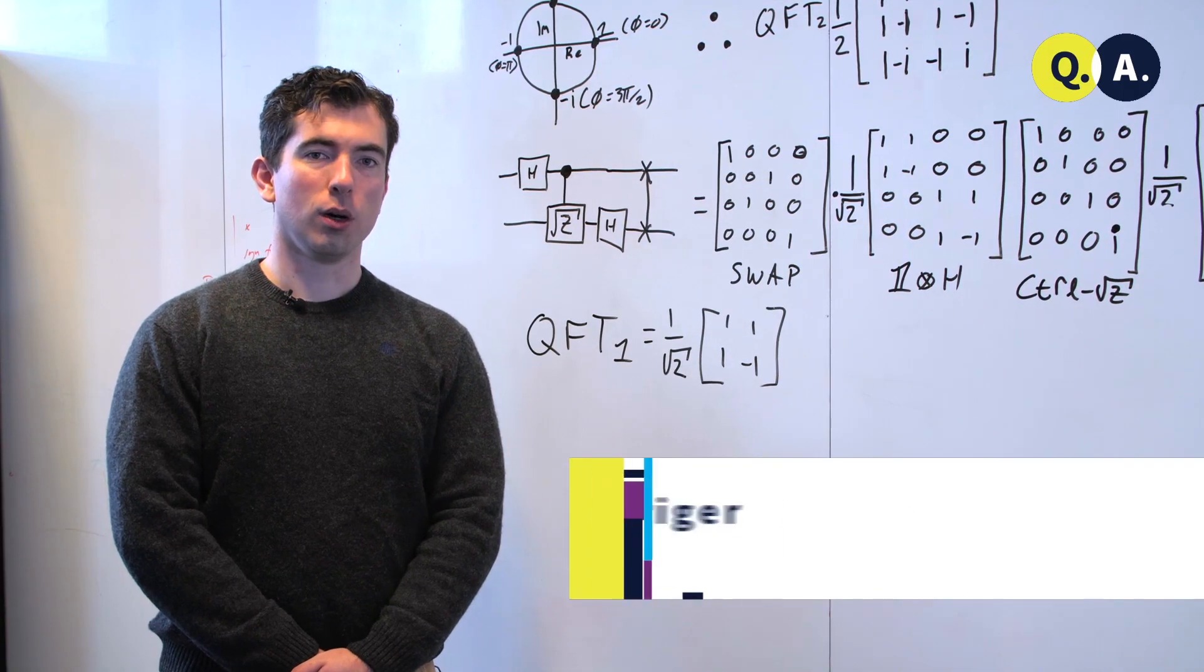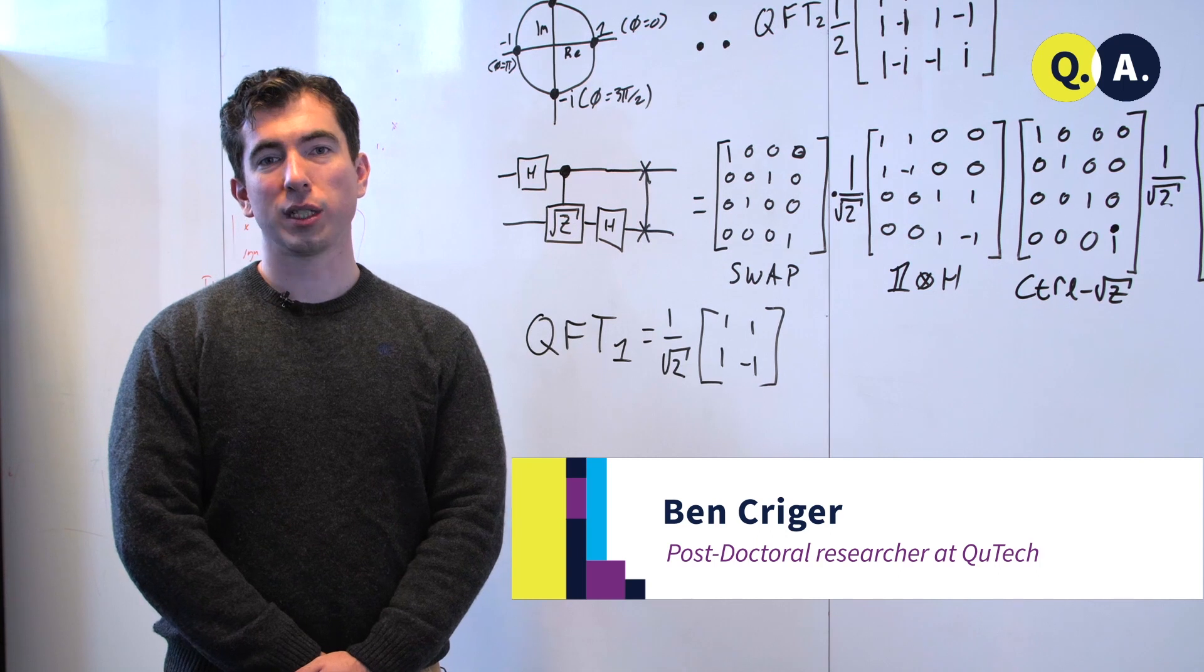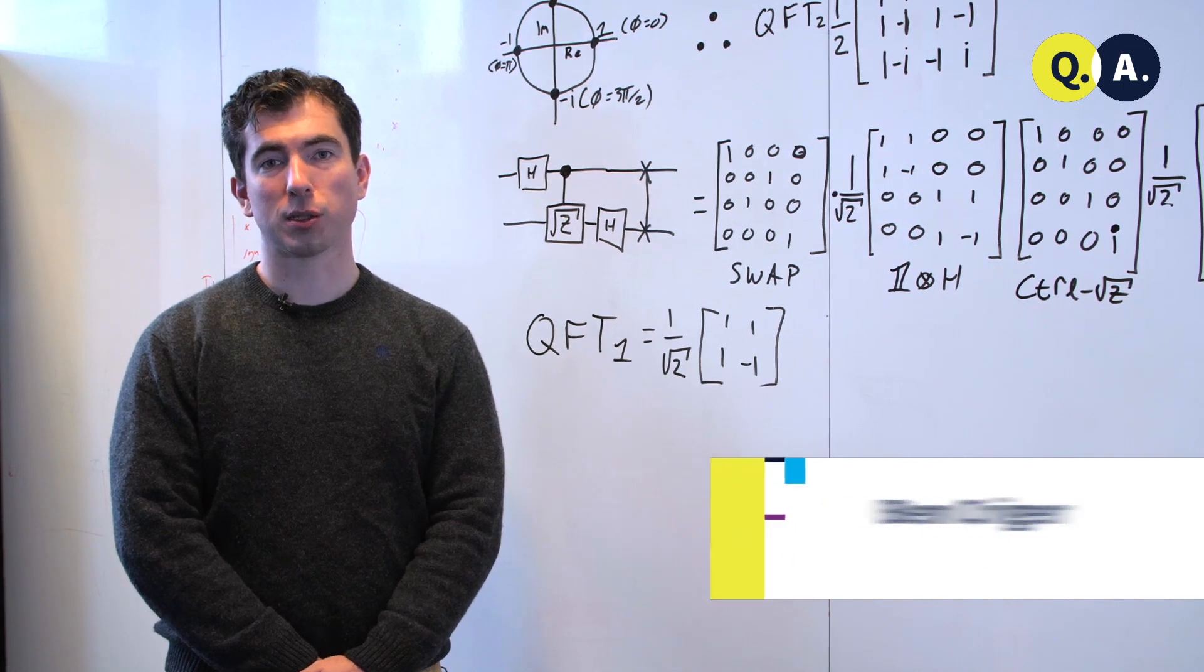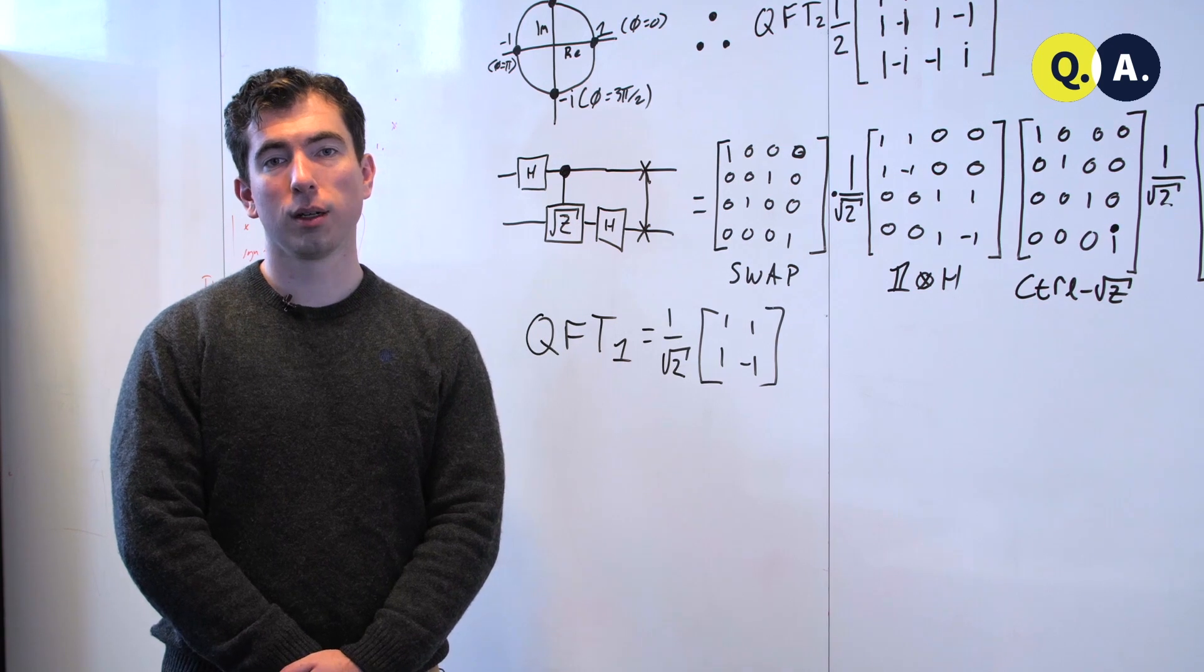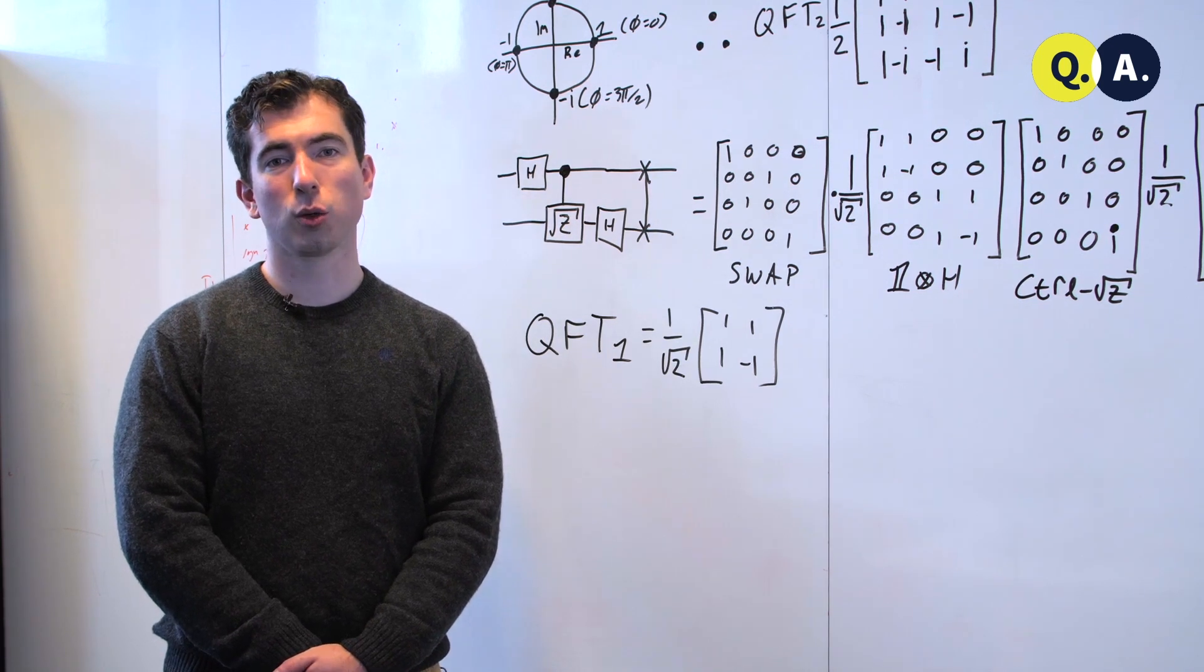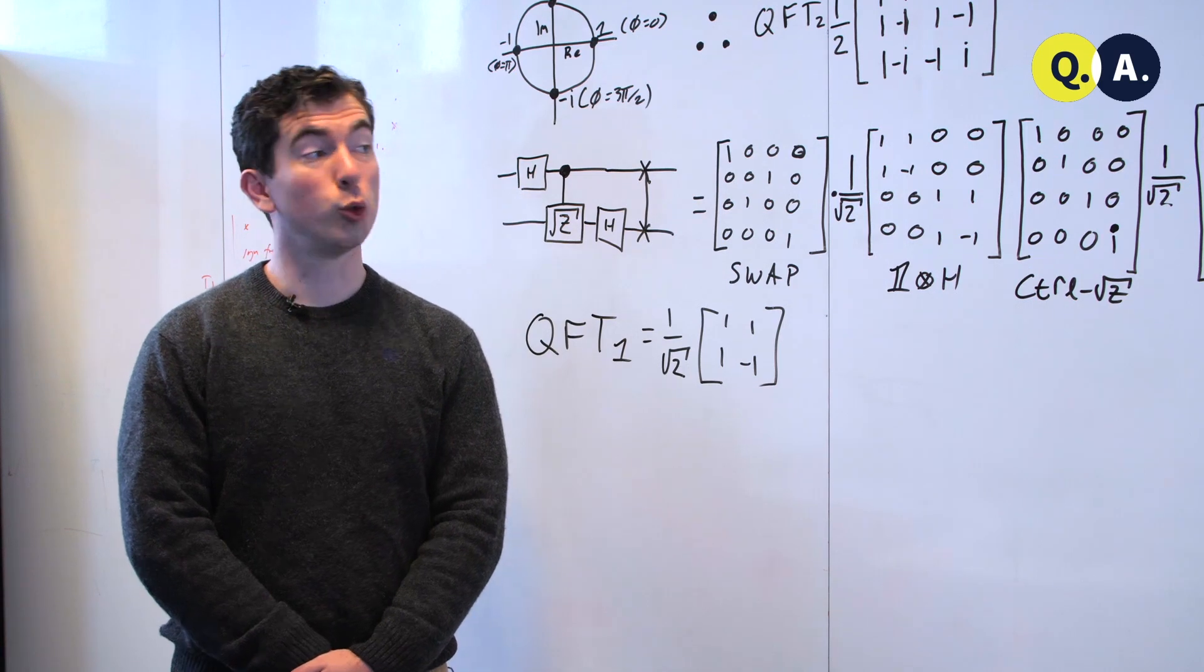It can be difficult at first to understand the quantum Fourier transform as well as its circuit decomposition. Here we're going to take a look at a geometric picture for deriving the coefficients of the quantum Fourier transform and a little example on two qubits.